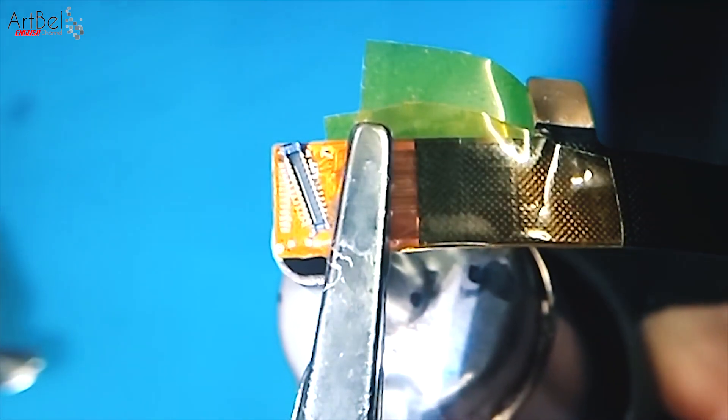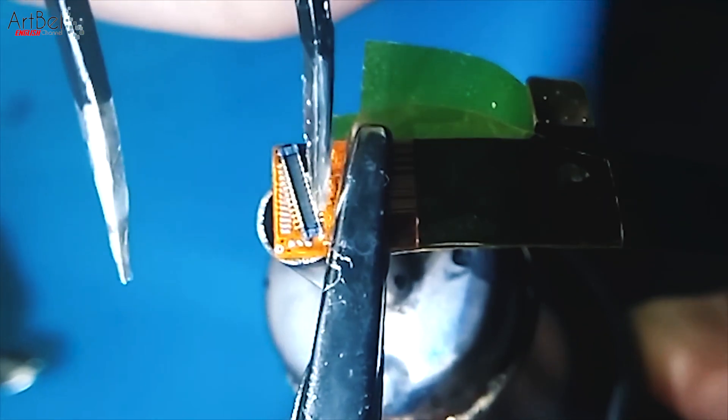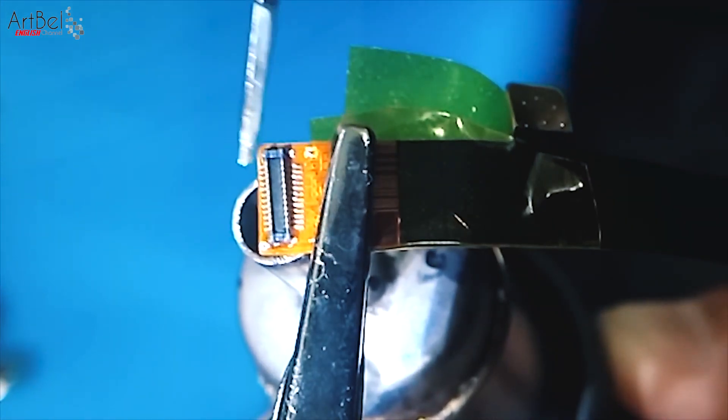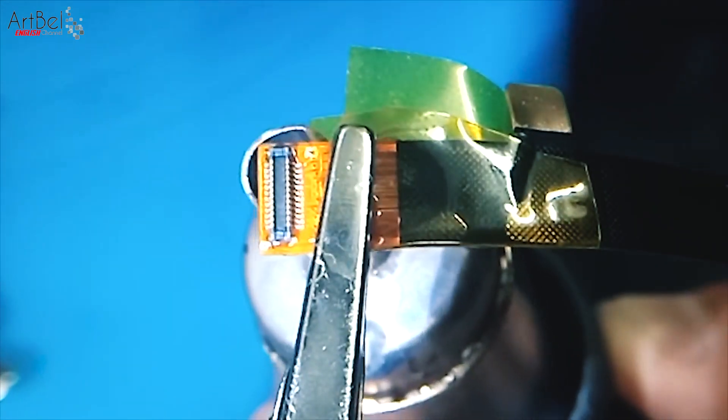We are waiting for the solder to melt on the cable and after that center the connector. Swinging from side to side, it will still fall into place by itself. After that warm up a little more and remove the hair dryer.